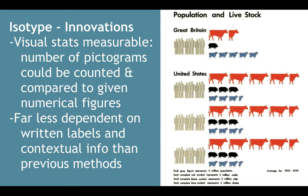In terms of innovations, it helps to make visual statistics memorable. The number of pictograms depicted can be counted and compared to given numerical figures. As a result, it was far less dependent on written labels and contextual information than previous methods. You could count the little men in the far left column, or the cattle that are red, the pigs that are black, or the sheep that are blue — basically reading through it without written labels.